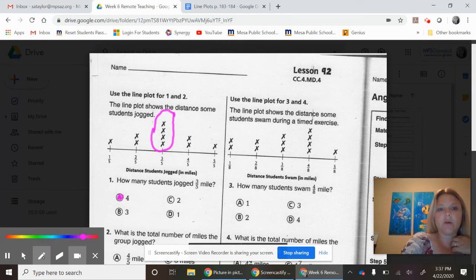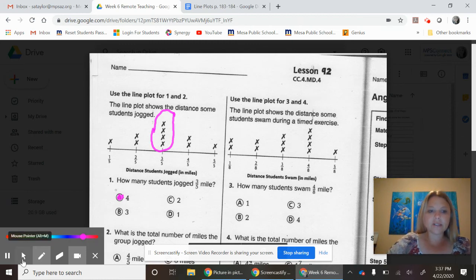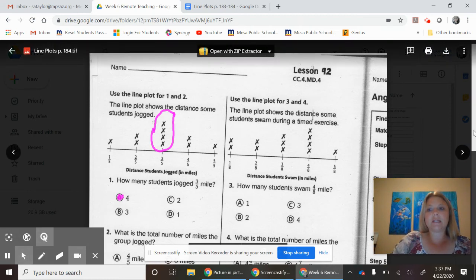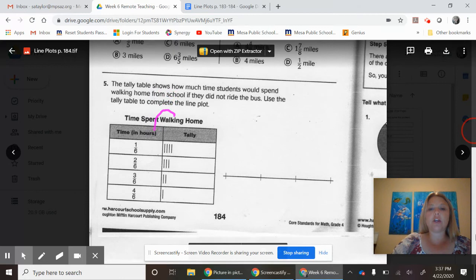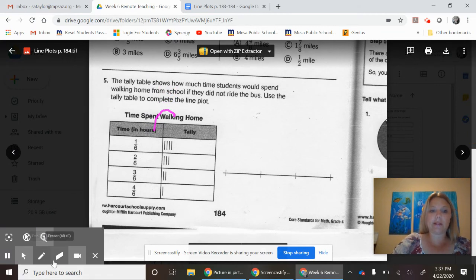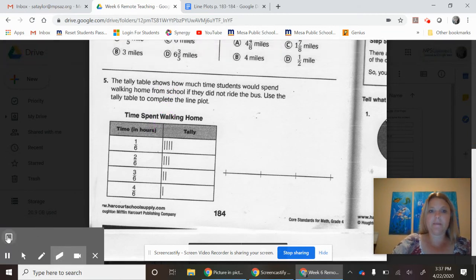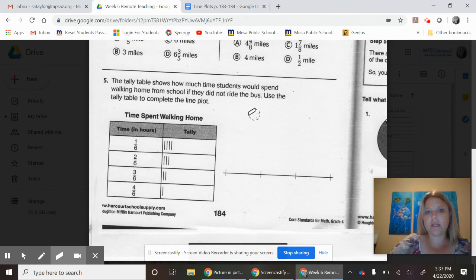I want to show you this last question because on your Google Doc it looks a little bit confusing. The tally table shows how many times students would spend walking home from school if they did not ride the bus. Use the tally table to complete the line. First of all, how many fractions do you see here? Four. How many lines do you see here? Four.